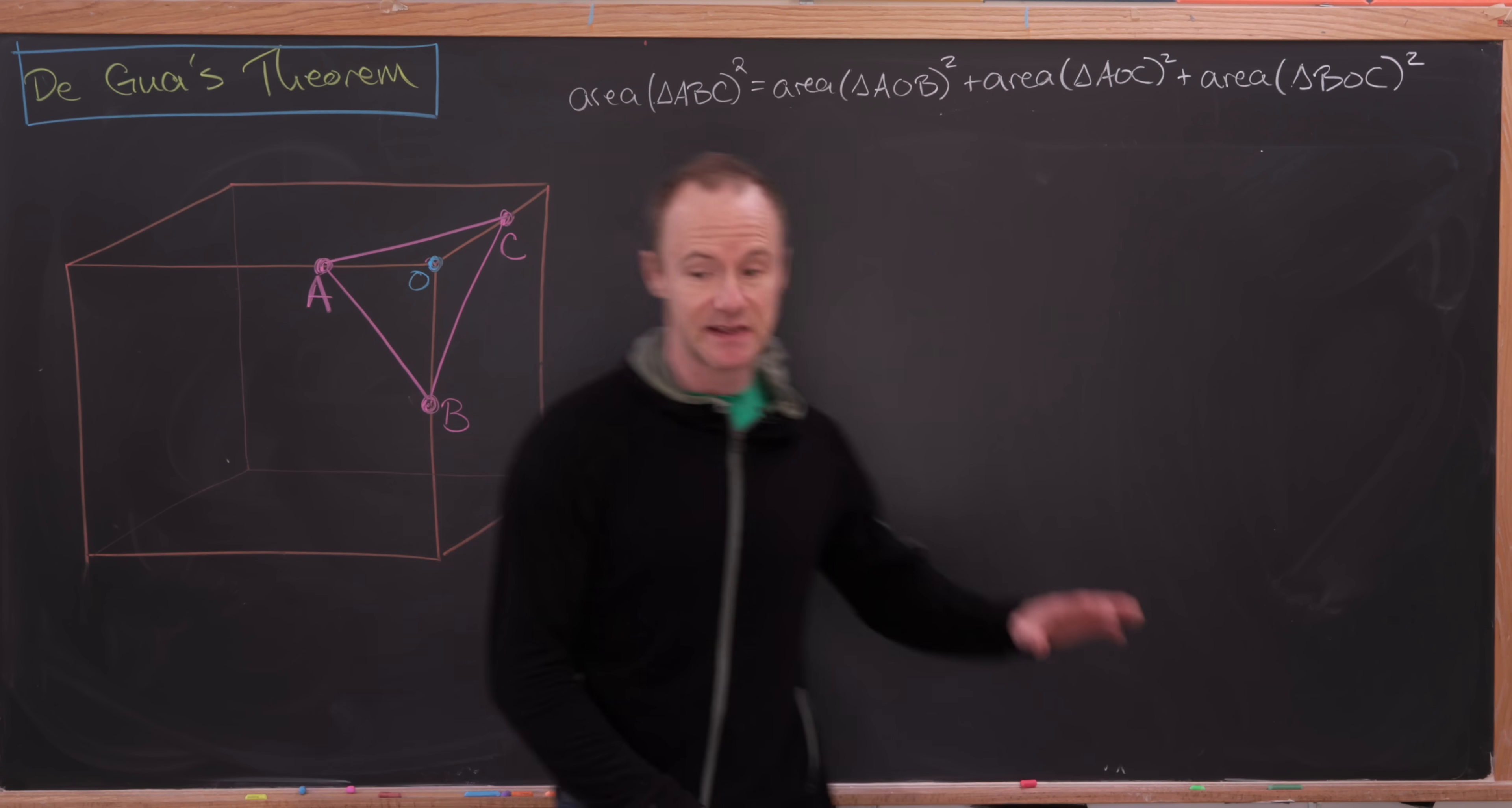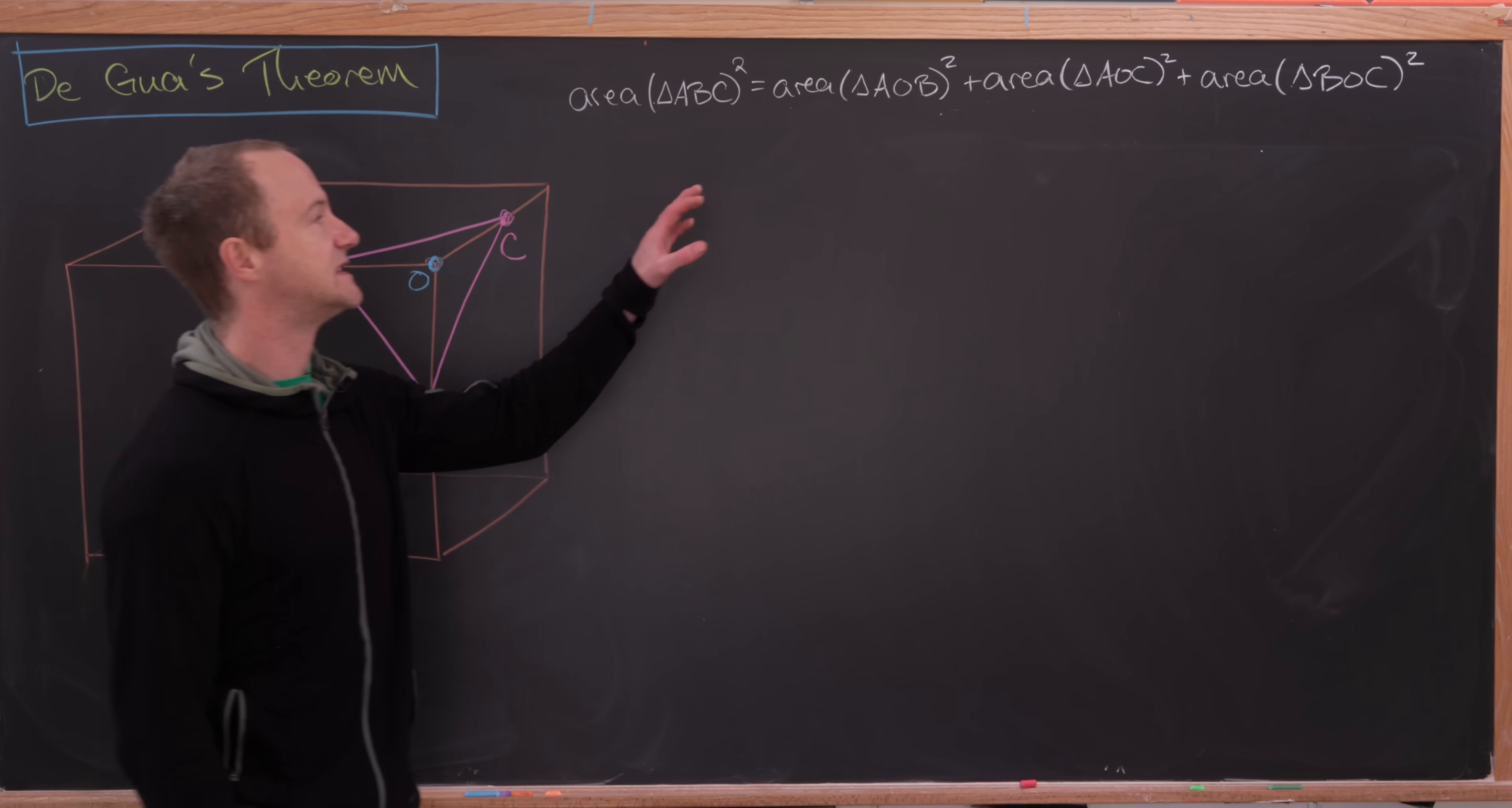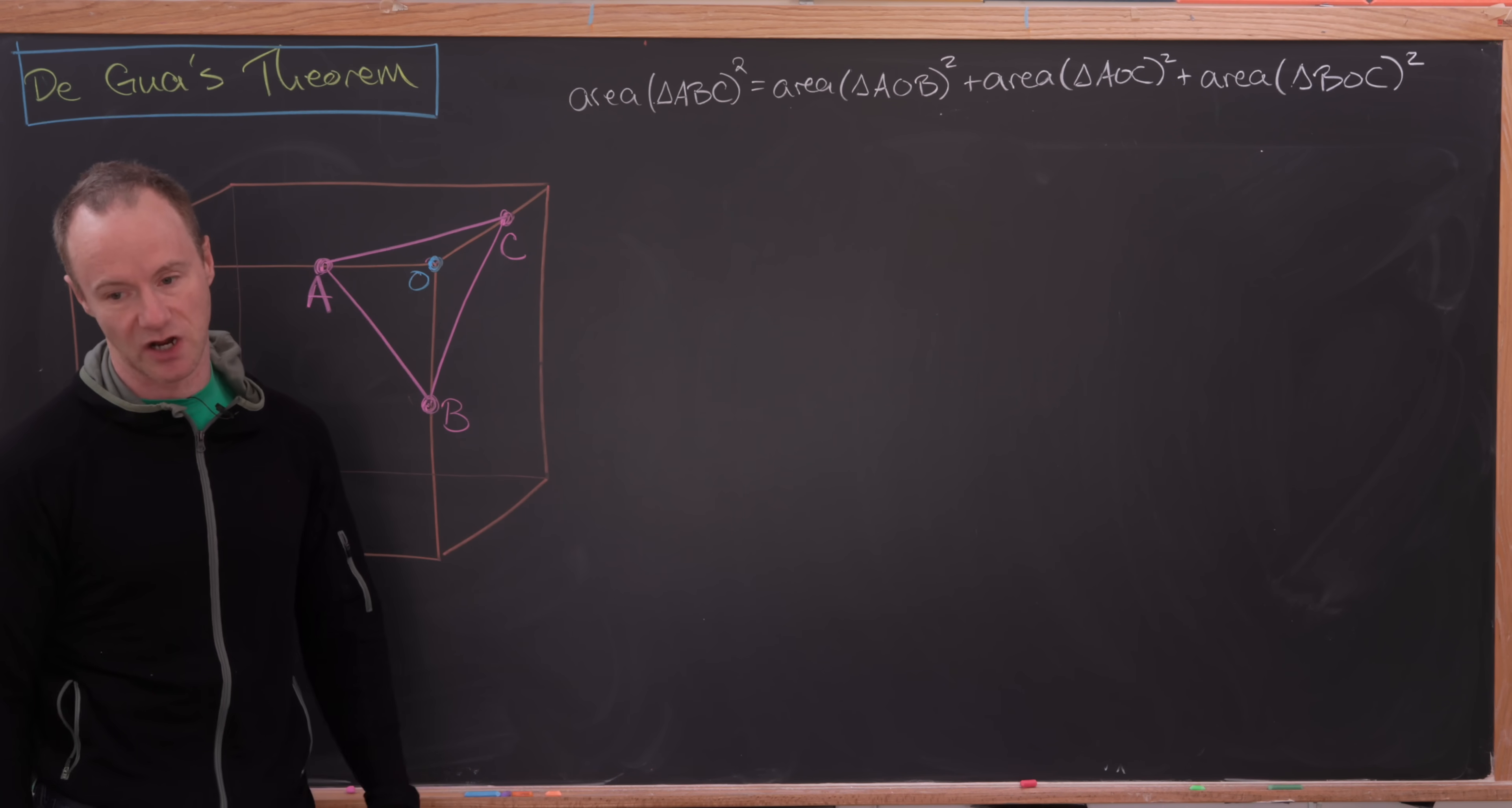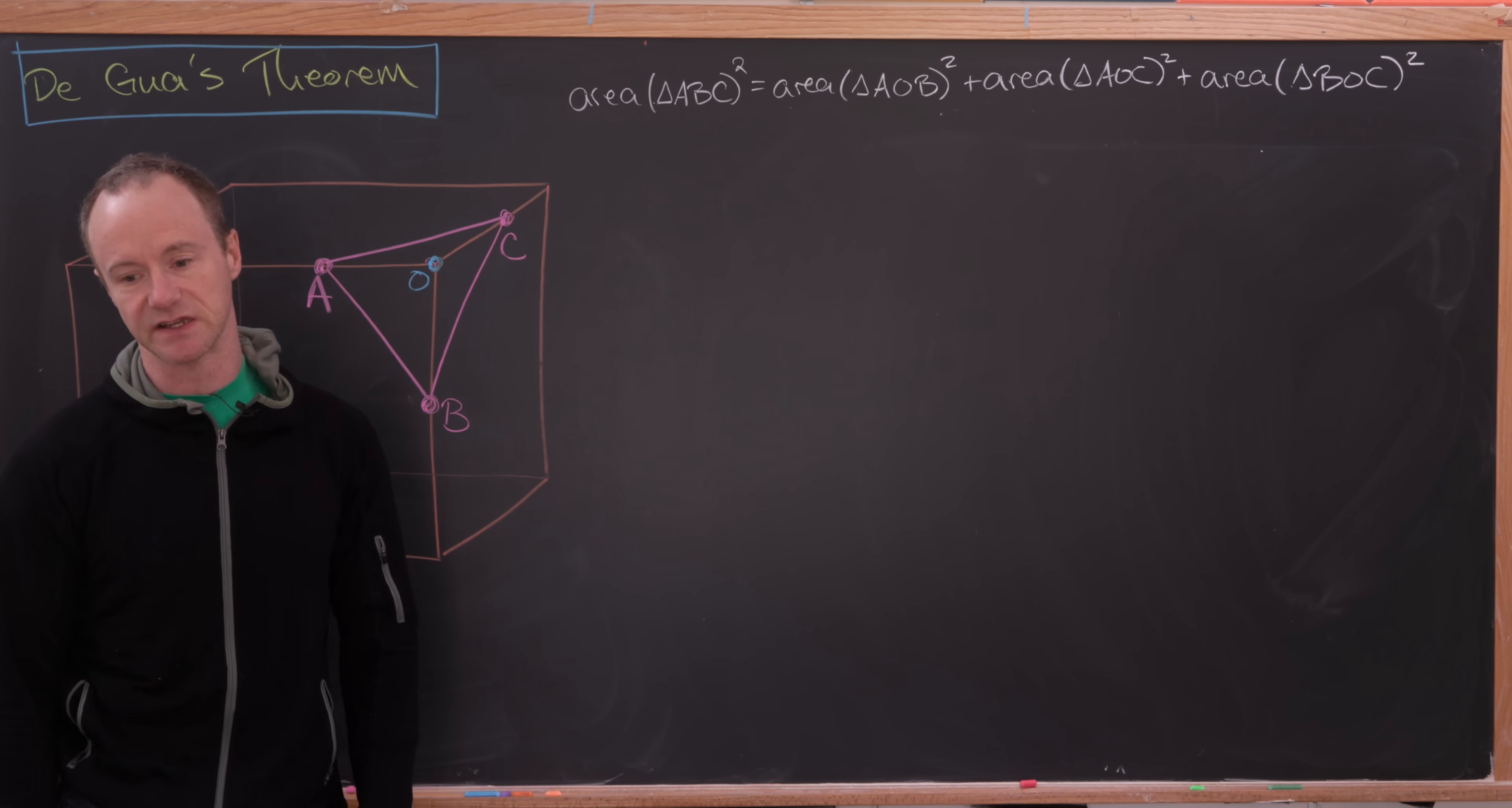says is that the area of the triangle within the box squared, so the area of triangle A-B-C squared, is equal to the sum of the squares of the areas of the component triangles. So notice that's what we have here: area of triangle A-O-B squared plus area of triangle A-O-C squared plus area of triangle B-O-C squared.